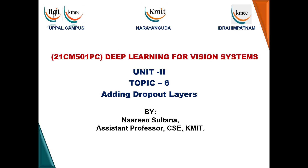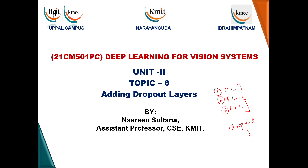Hello all. In today's session we will talk about the next topic: adding dropout layers. So far I have introduced three main layers of convolutional neural networks — the convolutional layer, the pooling layer, and the fully connected layer. Almost in every CNN architecture we find these three layers. Apart from these, there is an additional layer that can be added to the architecture to avoid overfitting, called the dropout layer.